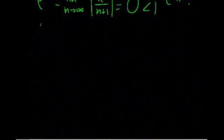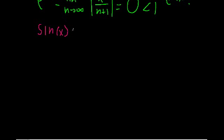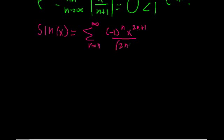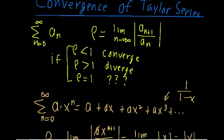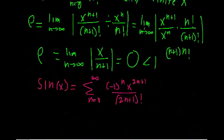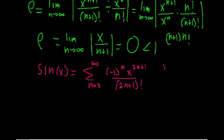We're going to apply that to our next Taylor series expansion. Sine of x is equal to the infinite sum of negative 1 to the n times x to the 2n+1 over (2n+1) factorial. Now it's important to keep in mind that when we take the n+1 term, what we're essentially doing is replacing every instance of the index n with n+1.